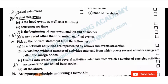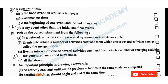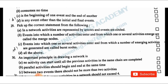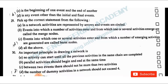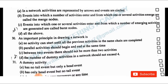Pick up the correct statement from the following: In a network, activities are represented by arrows and events are circled. Merge nodes are events into which a number of activities enter and from which one or several activities emerge. Burst nodes are events into which one or several activities enter and from which a number of activities emerge. The answer is: all of the above.